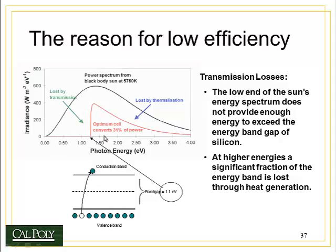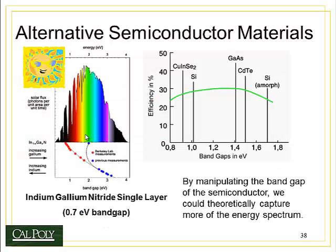This optimum cell is based on a cutoff voltage of around 1.1 electron volts for the band gap of silicon. We could try other semiconductors which have alternative band gaps. For example, copper indium selenide has a band gap of around 0.9 electron volts, gallium arsenide has a band gap around 1.4, and cadmium telluride around 1.5. So we can use these different semiconductors to try to capture different portions of the visible spectrum.